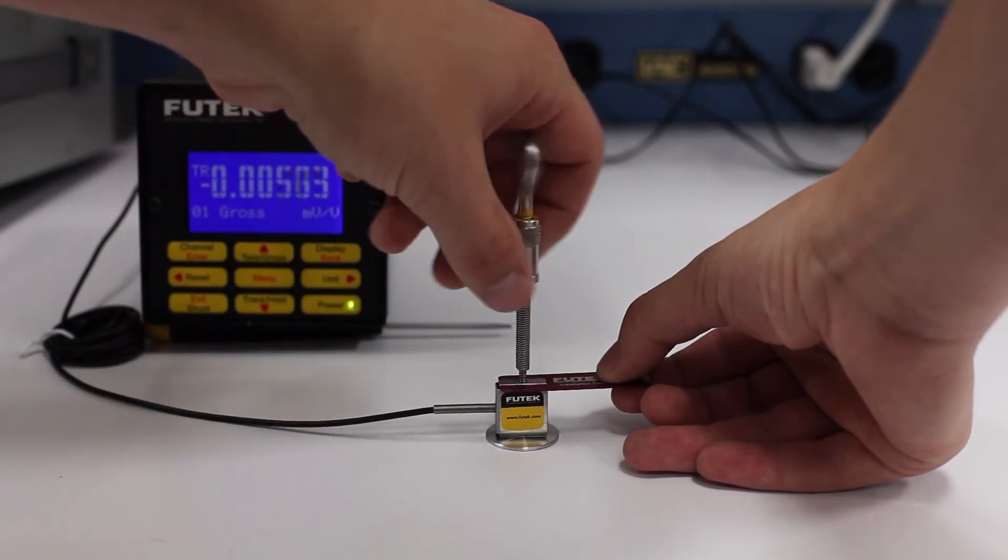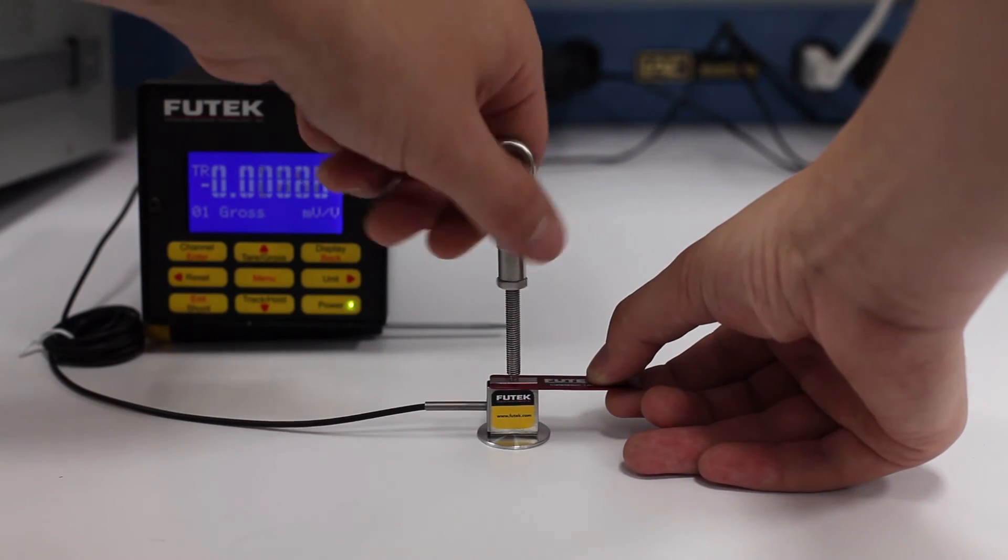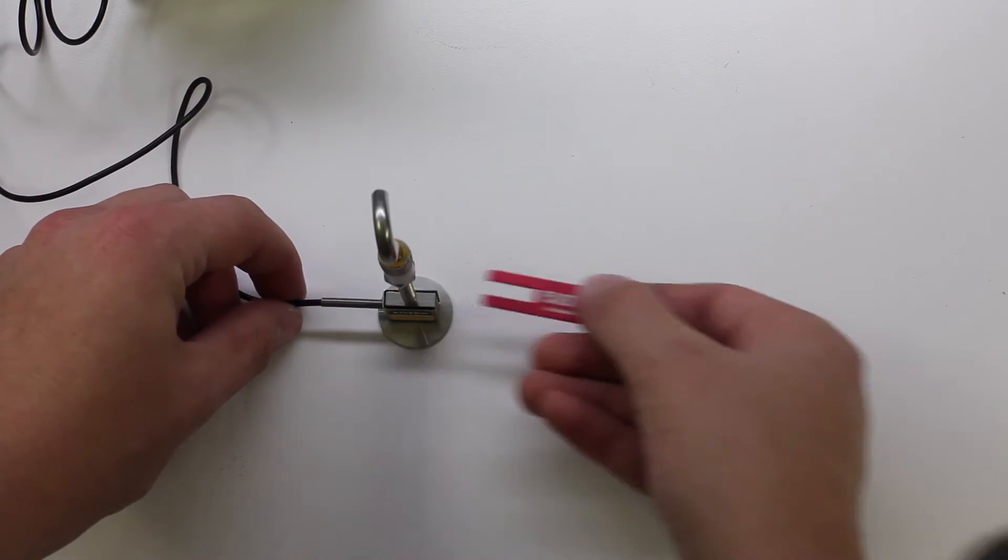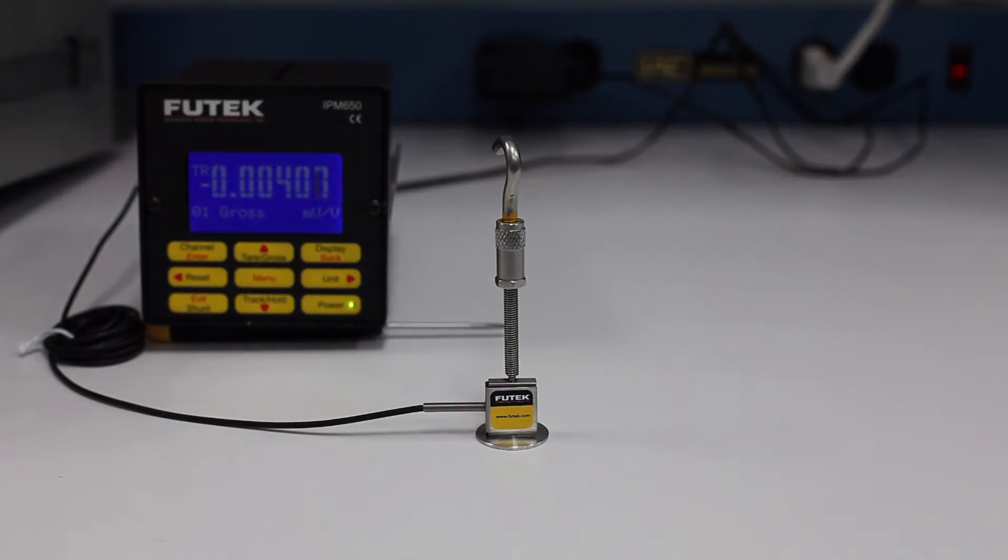Next, screw in the attachment while keeping the tool and sensor still. Try not to press down on the sensor too hard while screwing in the attachment. Also avoid screwing in the attachment too tightly as this can create harmful torque.